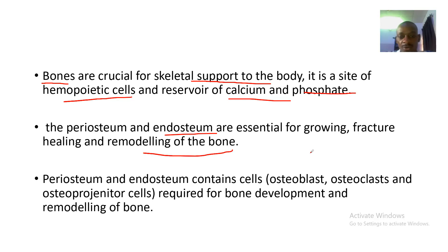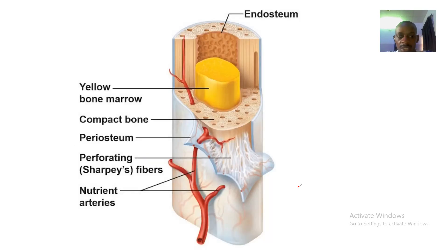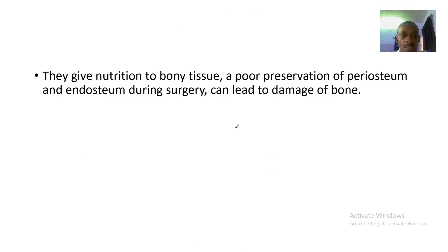The periosteum and endosteum are essential for bone growth, fracture healing, and remodeling. They contain bone cells — osteoblasts, osteoclasts, and osteoprogenitor cells — which are required for bone development and remodeling, and they provide nutrition to the bony tissue.